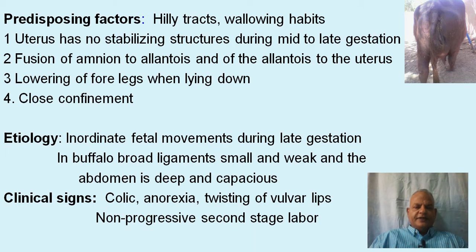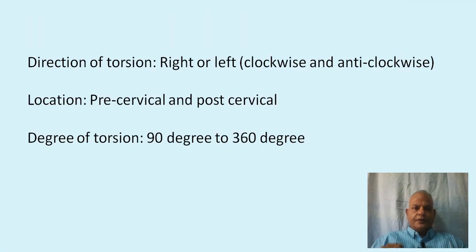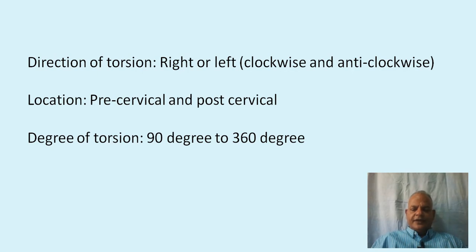The clinical signs include colic, anorexia, twisting of the vulva lips, and non-progressive second stage of labor. In the picture above, you can see twisting of the vulva lips to one side in a buffalo with uterine torsion. The direction of torsion could be right or left — considered clockwise or anti-clockwise. The location could be pre-cervical or post-cervical, and the degree of torsion could range from 90 to 360 degrees.